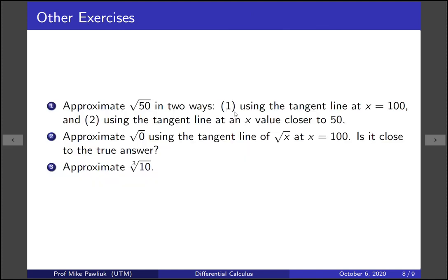Now let's have some exercises. I want you to approximate the square root of 50 in two ways. The first way is by using the tangent line at x equals 100 like we just did in this video. And the second way is to use a tangent line at an x value that's closer to 50. Compare the two answers you get.